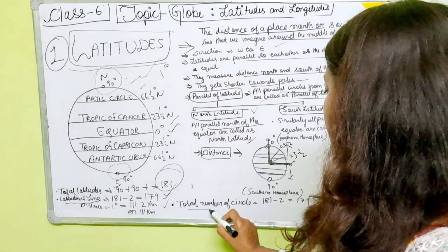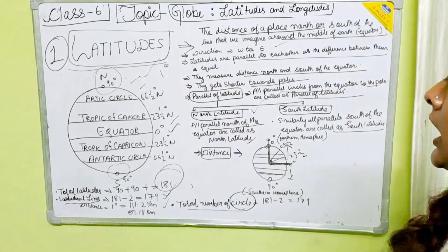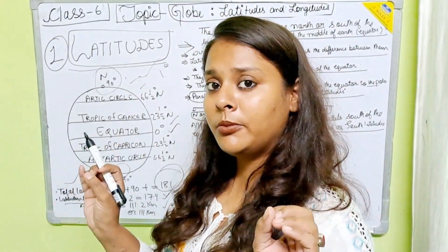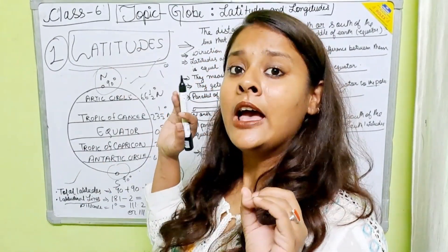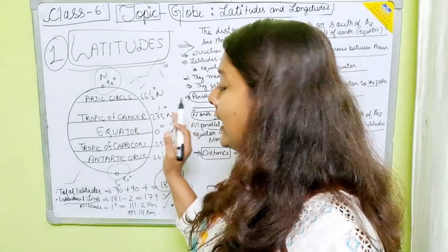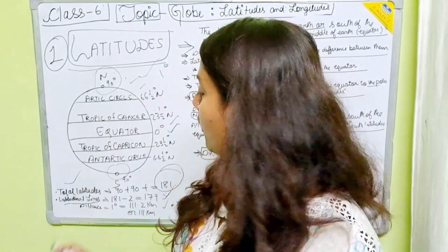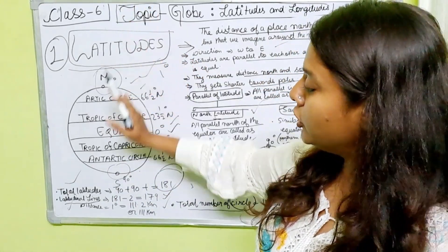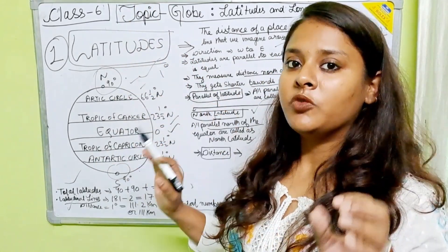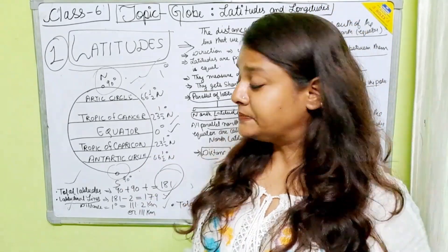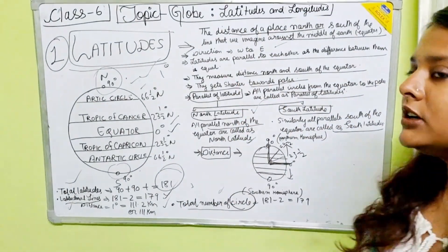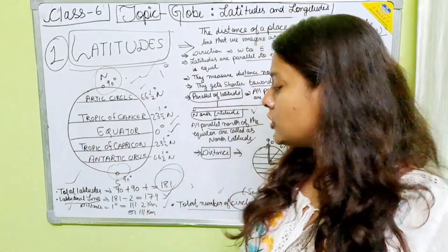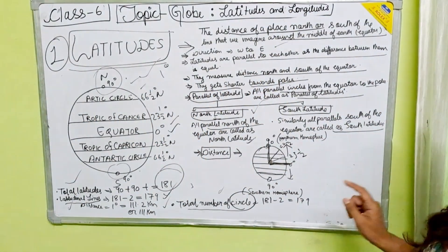The distance between the two latitudes which are parallel is one degree, and that one degree is equal to 111.2 kilometers. Total number of latitudes: 90 plus 90 plus 1 equals 181. Total latitudinal lines: 179 — we remove the North Pole and South Pole. Total number of circles is also 179, since Earth is a 3D sphere.